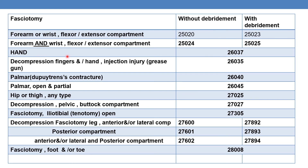For decompression fasciotomy of the hand, report 26037. For decompression fasciotomy of the fingers or hand to treat injection injury (e.g., grease gun injury), report 26035. For decompression fasciotomy of the palm to treat Dupuytren's contracture, report 26040; and for palmar open or partial fasciotomy, report 26045.